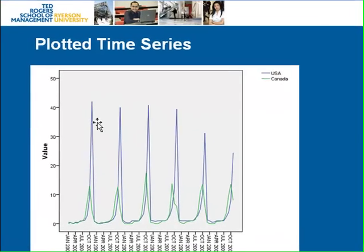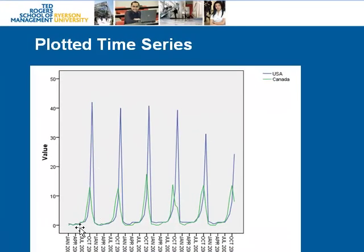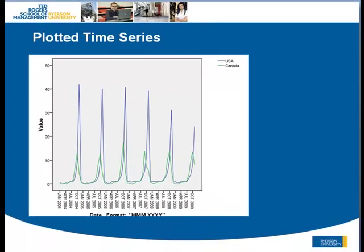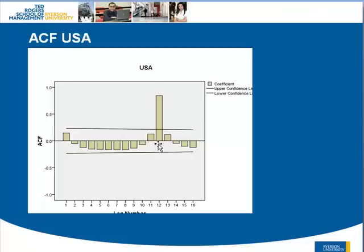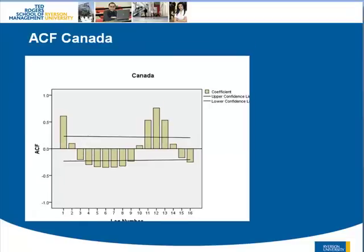Looking at the data, the US is much more pronounced and Canada is much less — very similar to the earlier graph. This is a plot of the autocorrelation function (ACF). At time period 12 you can see a pronounced autocorrelation structure, suggesting a strong autocorrelation at lag 12 for the US series.